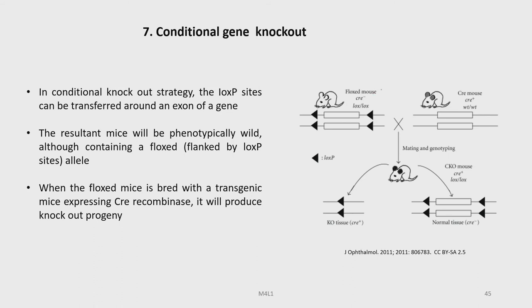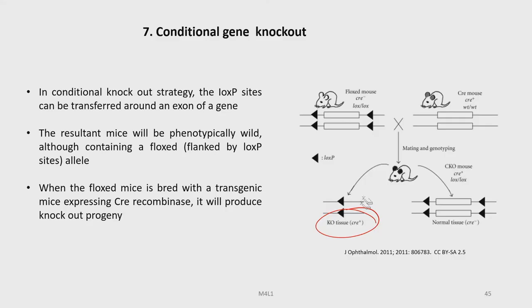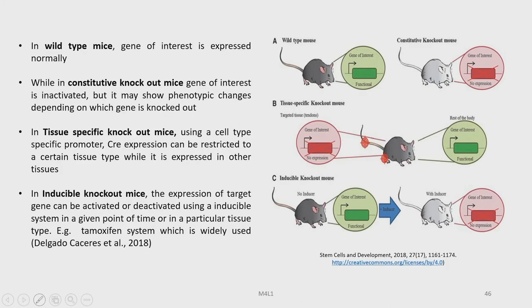The Cre-LoxP system requires both the LoxP regions and the Cre recombinase. The floxed mouse is Cre-negative but LoxP-positive and homozygous for LoxP, while the other mouse is Cre-positive but has no LoxP site. When these two mice are crossed, in some cases Cre recombinase will act on the LoxP sites, carrying out the knockout. In wild-type mice, the gene of interest is expressed normally, while in constitutive knockout mice, the gene of interest is inactivated and may show phenotypic changes depending on which gene is knocked out.